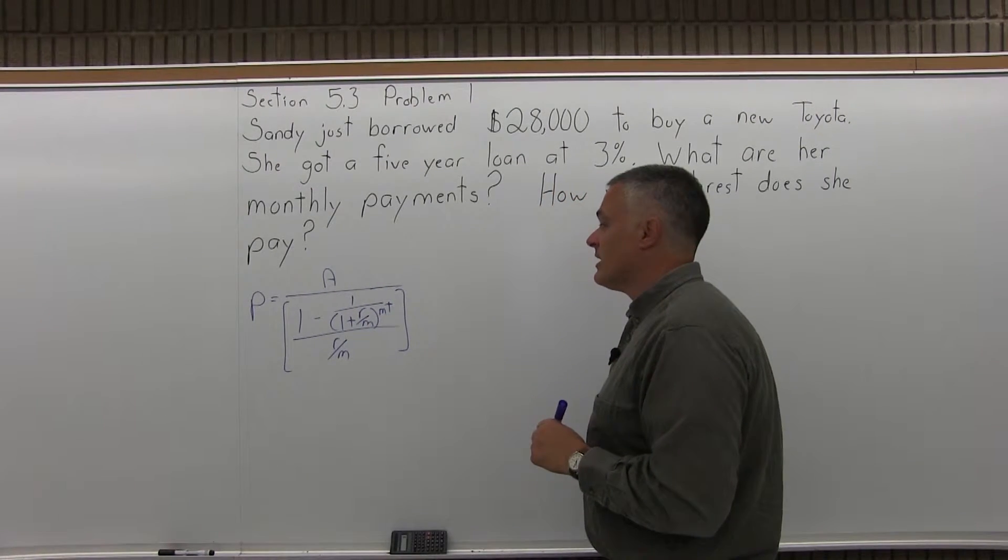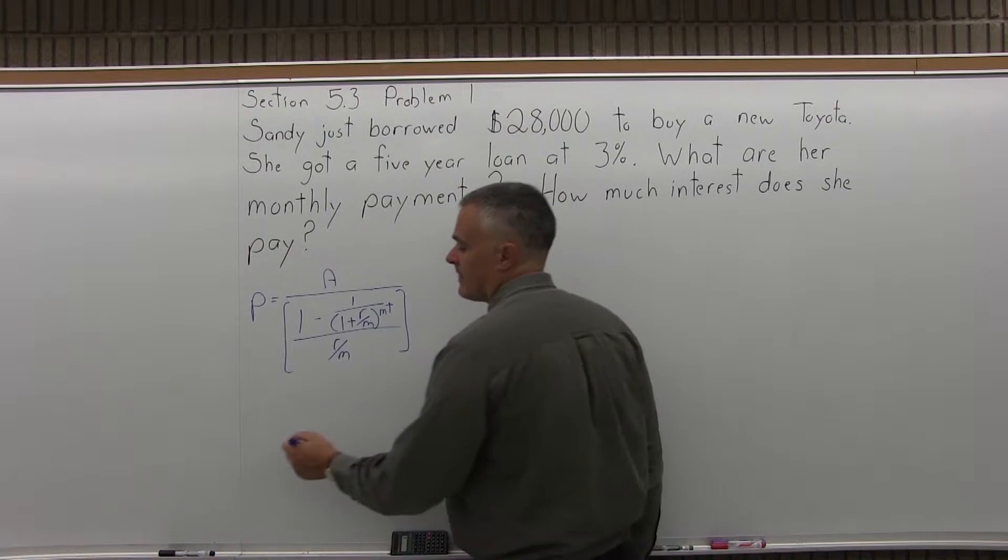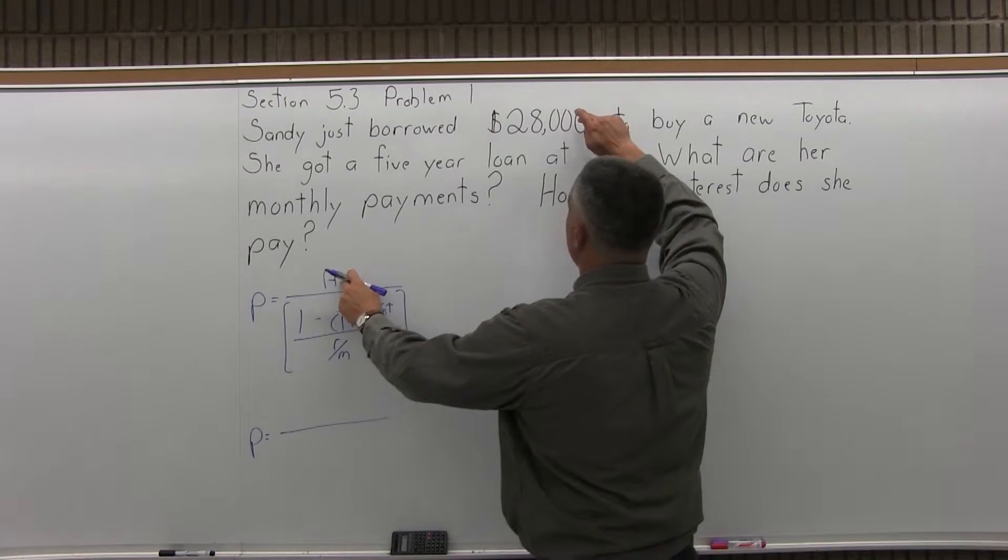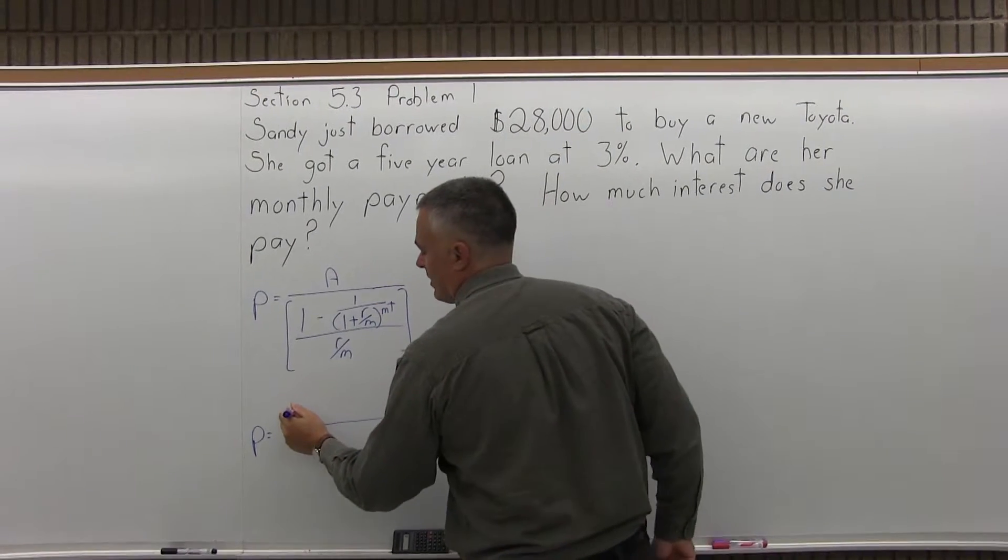And now we have to plug in the values where they go. So P, the payments, equals A, the amount borrowed. So for this problem it's $28,000. That's the amount borrowed.